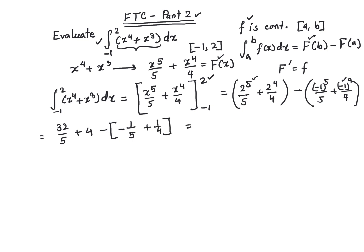If I simplify it, it's going to be 4 times 5 is 20, plus 32 is 52/5, plus 1/5 minus 1/4.